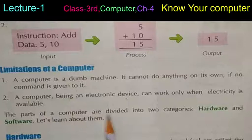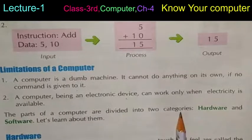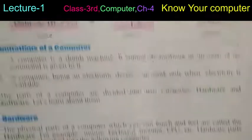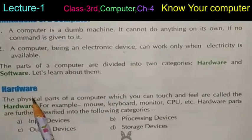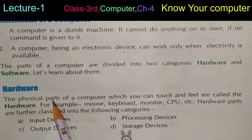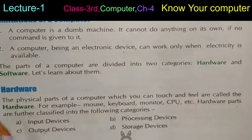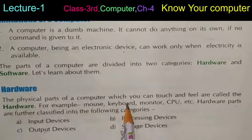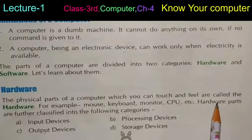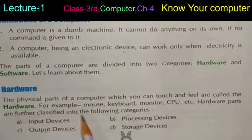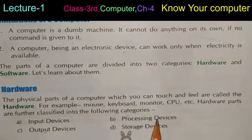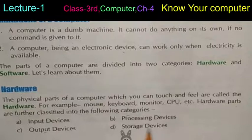The parts of a computer are divided into two categories: hardware and software. Hardware: the physical parts of a computer which you can touch and feel are called hardware — for example, mouse, keyboard, monitor, CPU, etc. Hardware parts are further classified into: input devices, processing devices, output devices, and storage devices.